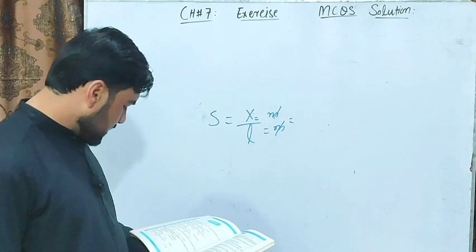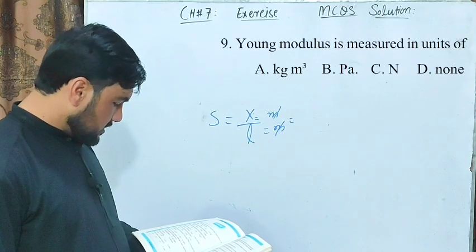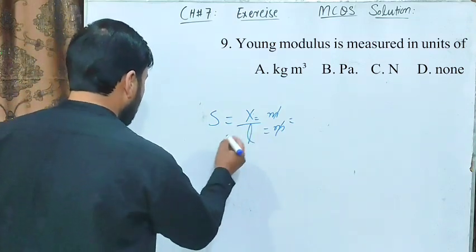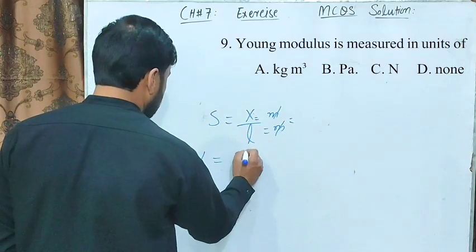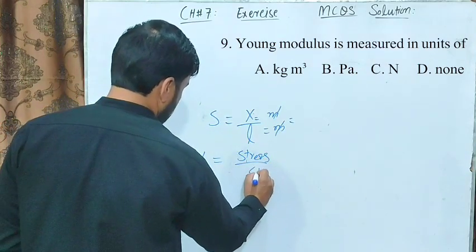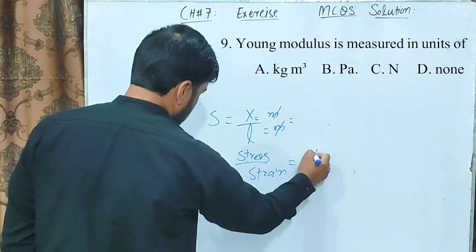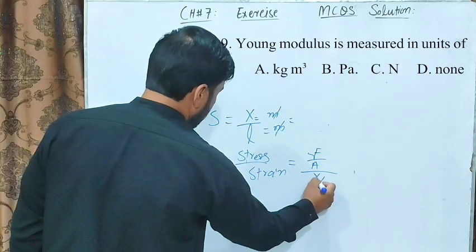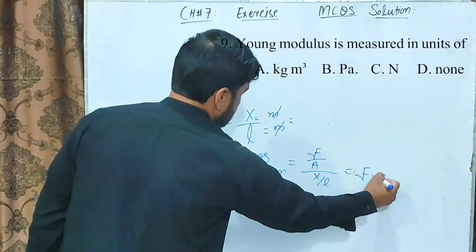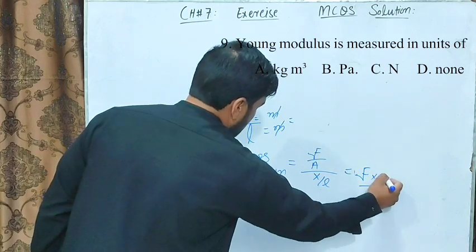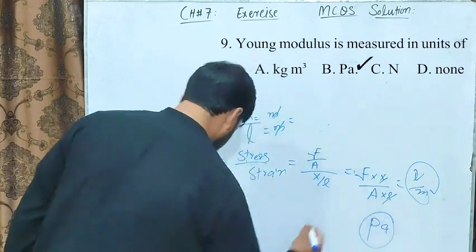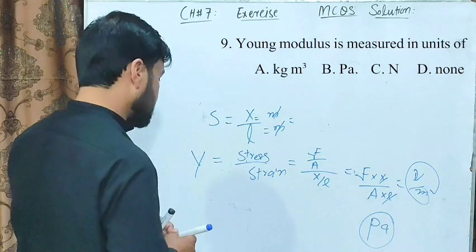MCQ number 9: Young's modulus — what is its unit? Young's modulus equals stress divided by strain. Stress is force per unit area (newton per meter square), and strain is dimensionless. So Young's modulus has the unit newton per meter square, which is pascal. Correct option is B: pascal.